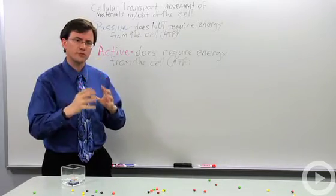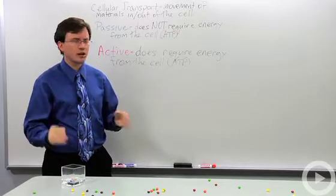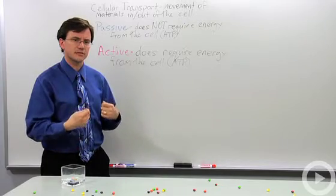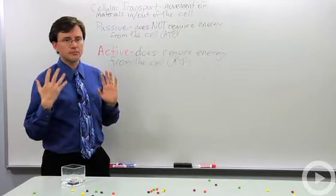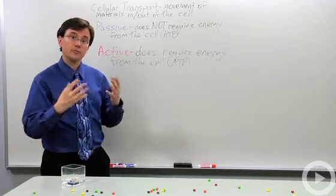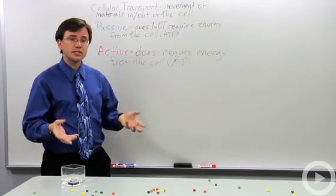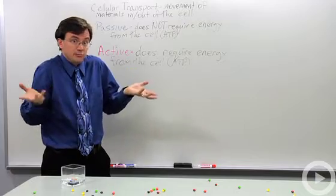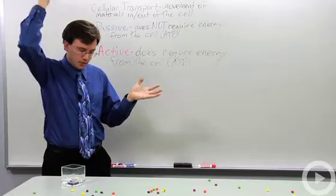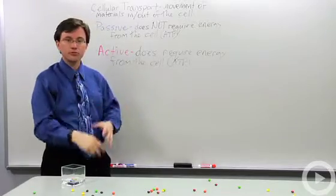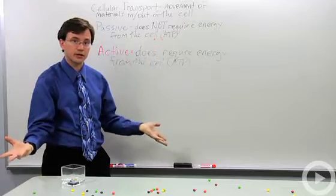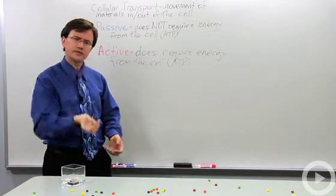All right, on to active transport and again this is when the cell is having to spend its energy in order to get stuff to come in or out. Now the simplest to understand of this are the pumps that are in the membrane made of proteins. So these proteins are like regular pumps, they pump stuff. Just like if you're in a boat and you ram a hole through the bottom, you see water moves in passively. Why? Because there's a lot of water on the outside not so much on the inside. That's like facilitated diffusion.